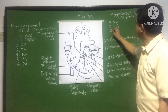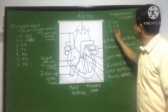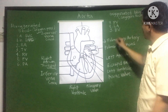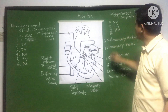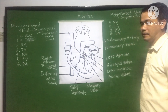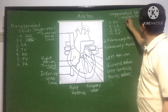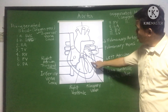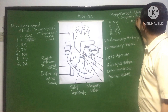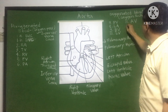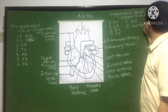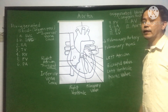Number 9 is the left atrium. Then the blood pushes through number 10 — the bicuspid valve — and enters the left ventricle. Number 11: the blood exits the left ventricle through the aortic valve. And the last part is called the aorta.